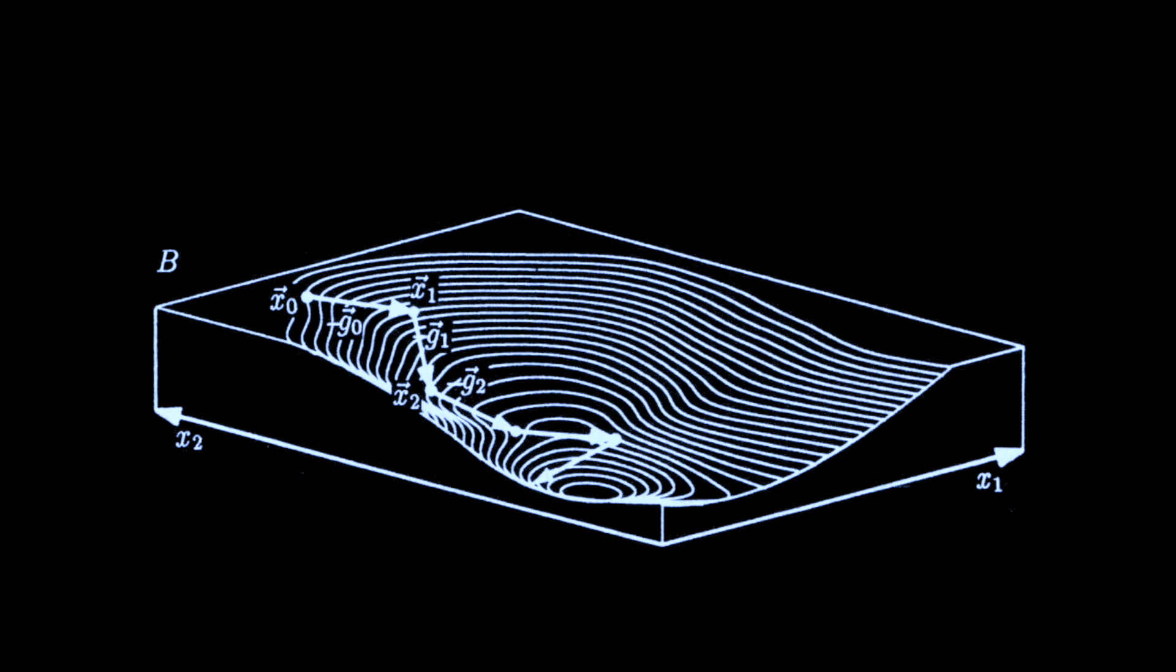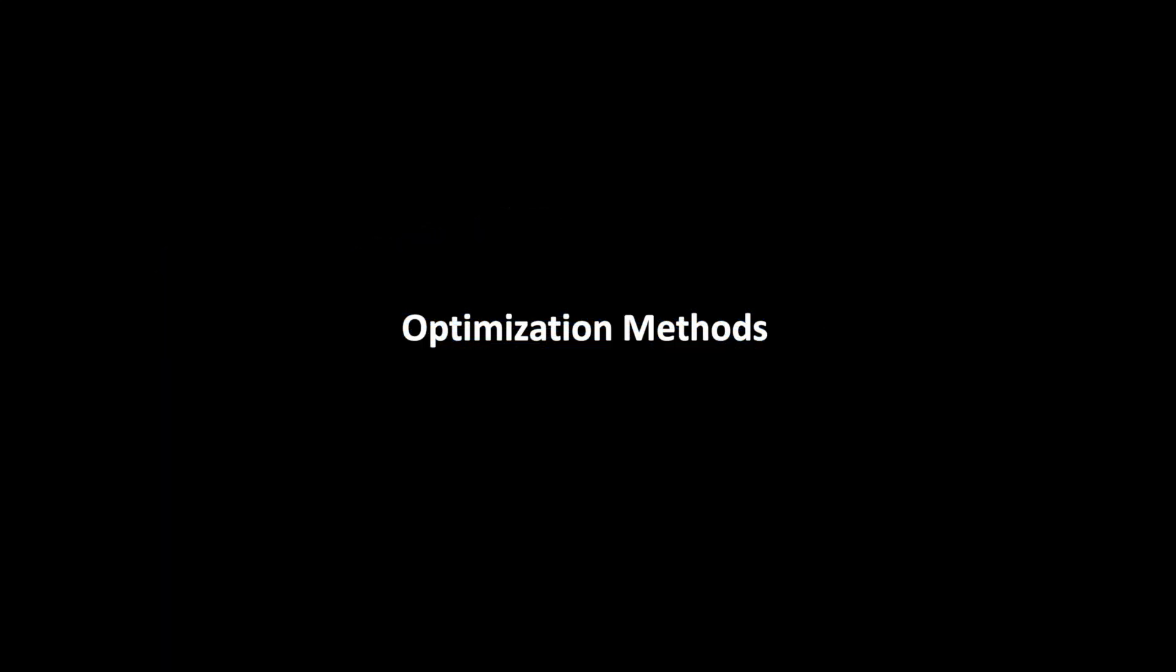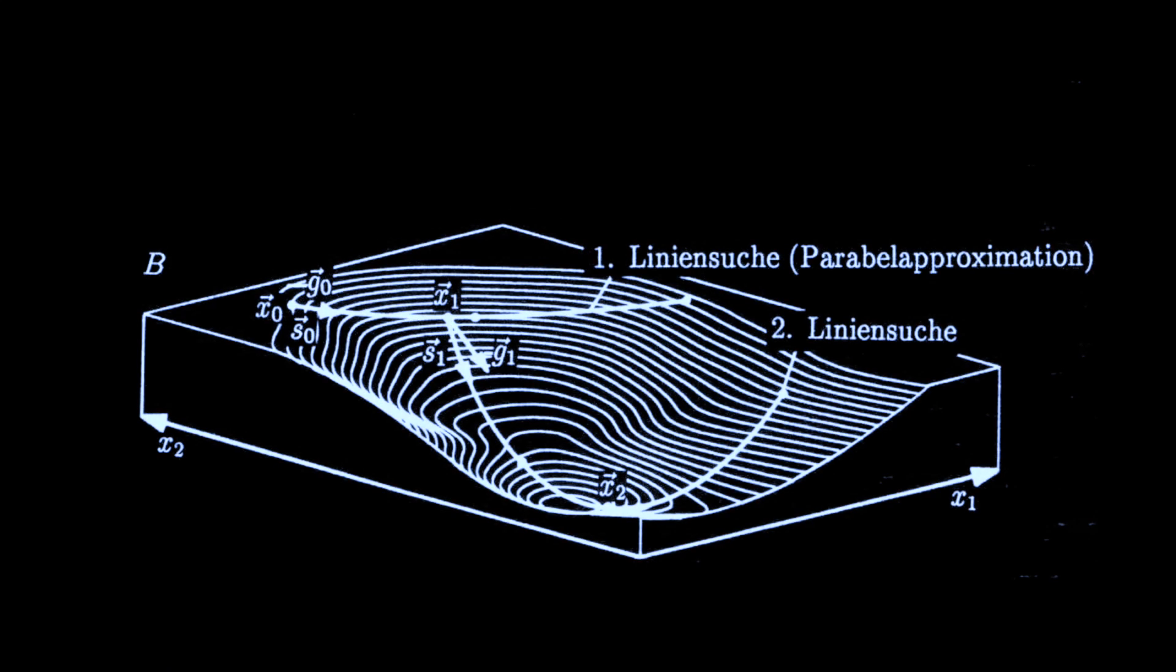Each step in that landscape is representing a computation to analyze the properties of your subject. Advanced algorithms are trying to reduce the number of computations using a functional approximation of the landscape.